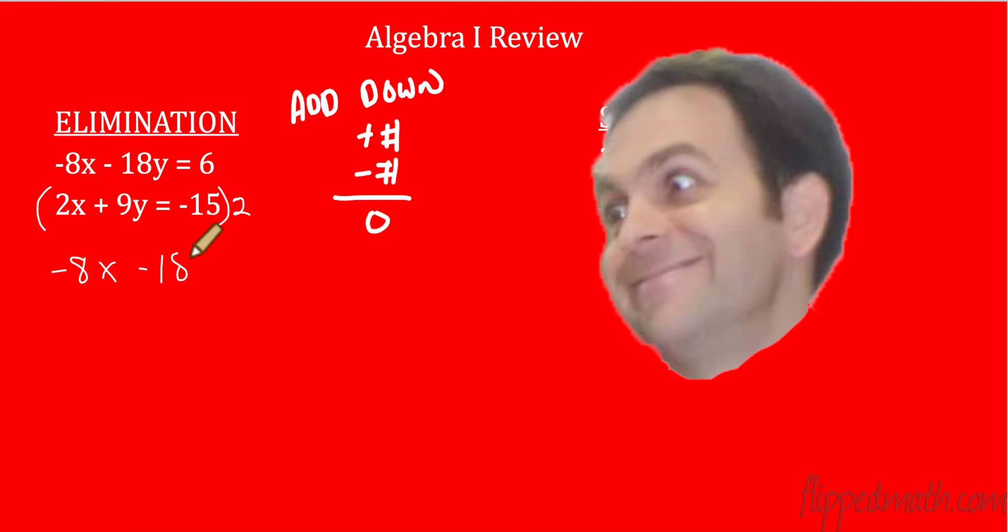So let's see what we have now. I have my first equation, of which I did nothing to it. My second equation, I have to multiply every single thing here. Remember that? 2x times 2 gives me 4x. 9y times 2 gives me positive 18y. And negative 15 times 2 is negative 30. Now you'll see right here in the middle, I have the same number but opposite. So when I add these two things up, I'm going to get, those will be eliminated.